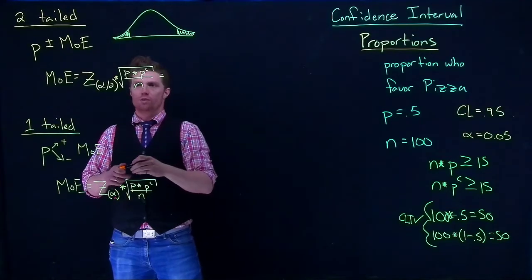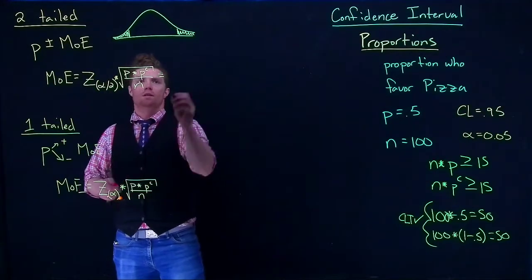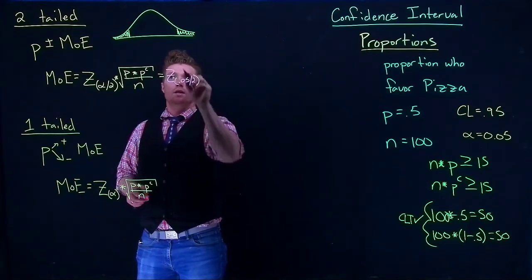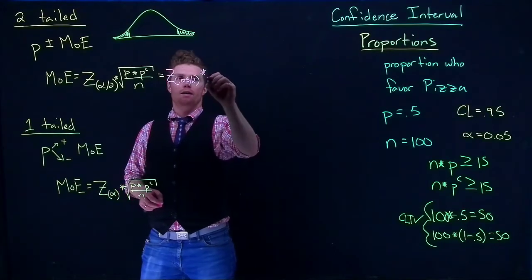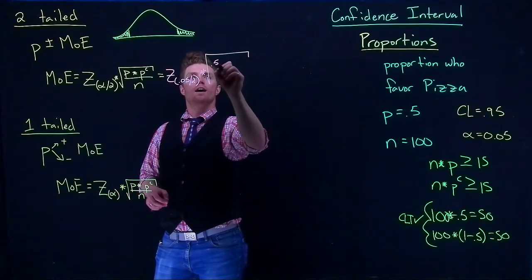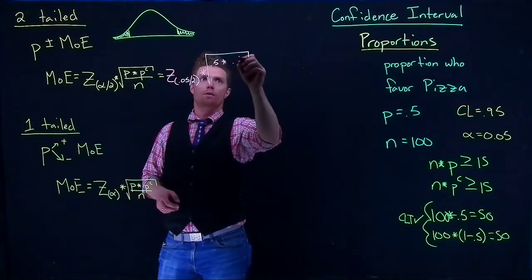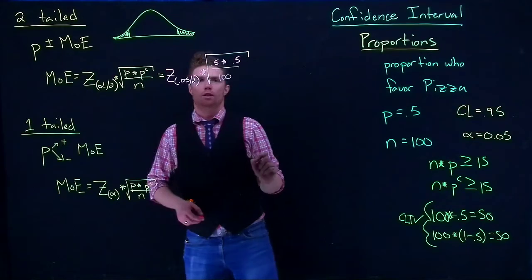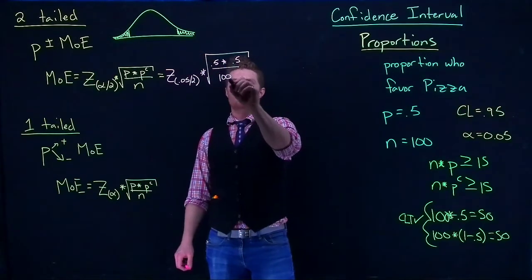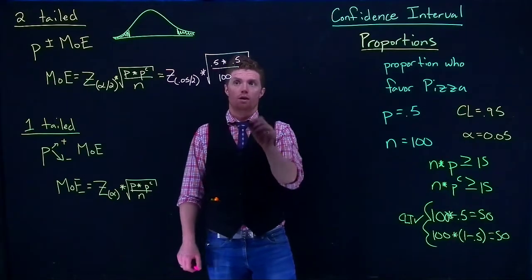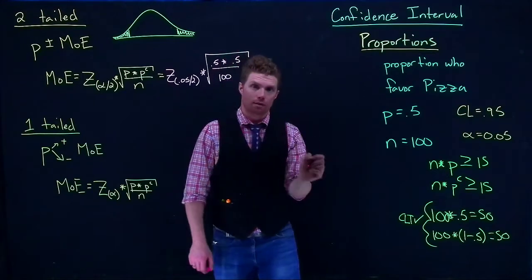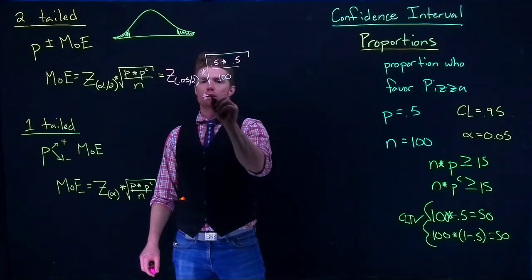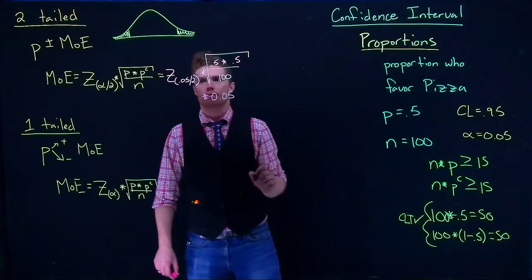Let's go ahead and fill this in. We know that this is going to be z of 0.05 divided by 2, because we're putting it into the two sides, multiplied by the square root of 0.5 times p complement, which is also 0.5, divided by 100. One error that I see happen a lot is that this divided by 100 gets on the outside of the square root. Make sure that you are doing this calculation inside before you take the square root.